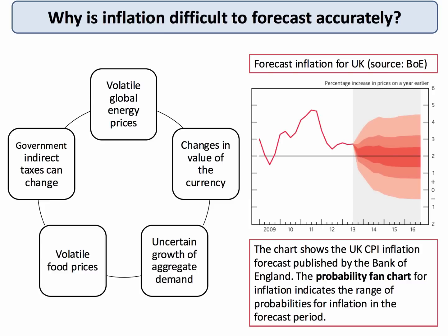Inflation is quite hard to forecast — especially about the future! There are lots of external shocks, such as the price of oil, gas, copper, rubber, and coffee. The economy is quite volatile from month to month and year to year. Governments can change their VAT and tax systems, the currency can move up and down, commodity and food prices can change, and the economic cycle can twist as well. Hence the so-called 'inflation rivers of blood' chart shown here from the Bank of England — the further we look into the future, the harder it is to forecast the rate of inflation going forward. More on that when we look at monetary policy.